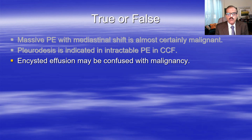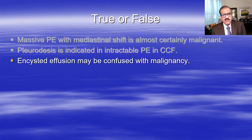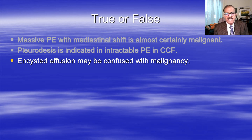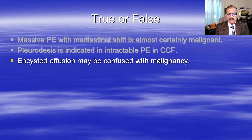Encysted effusion may be confused with malignancy, because in encysted effusion the fluid may look rounded just like a tumor and be diagnosed as a malignant tumor. With treatment, when the effusion disappears the apparent tumor disappears - we call it a phantom tumor, or vanishing tumor. These days with CT we can be sure whether it is a fusion or a true tumor.